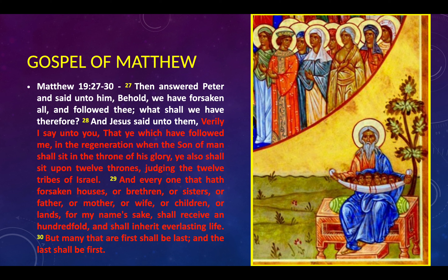'And everyone that hath forsaken houses or brethren or sisters or father or mother or wife or children or lands for my namesake shall receive a hundredfold and shall inherit everlasting life. But many that are first shall be last and the last shall be made first.' I believe this refers to: the first were the Jews; the last were the Gentiles. Even though the disciples and many of the early church fathers were Jews, the faith spread mainly among the Gentiles. So the last that shall be first suggests the Gentiles shall enter the kingdom first, and the first shall be last connects to Matthew 19:28 and Revelation 20:4.